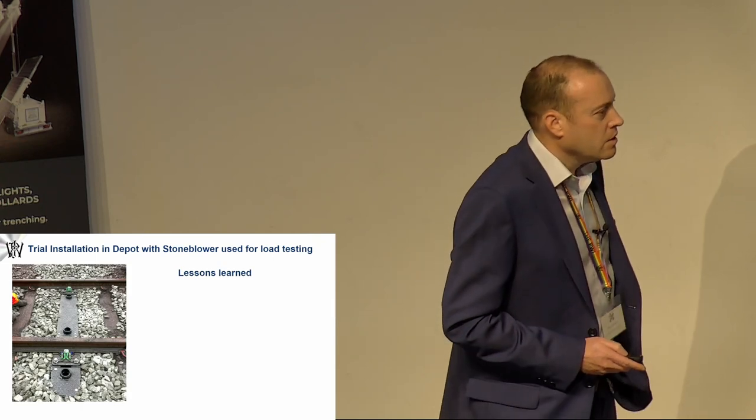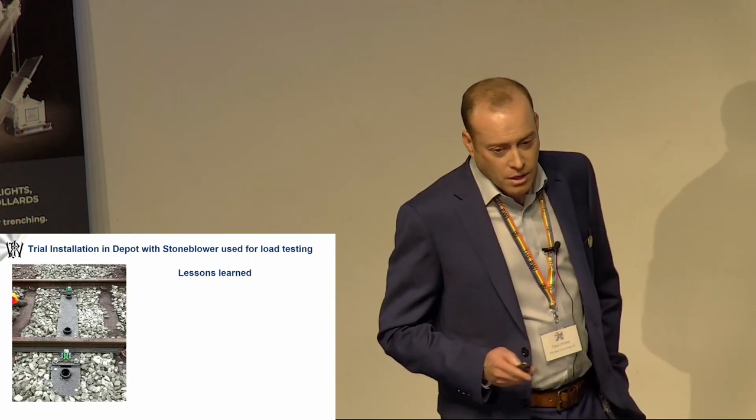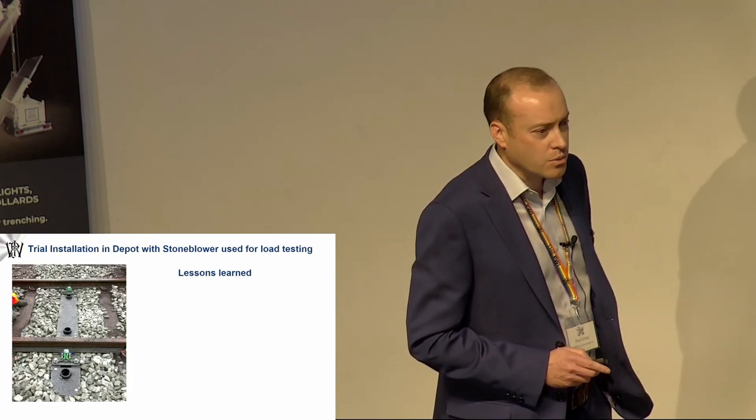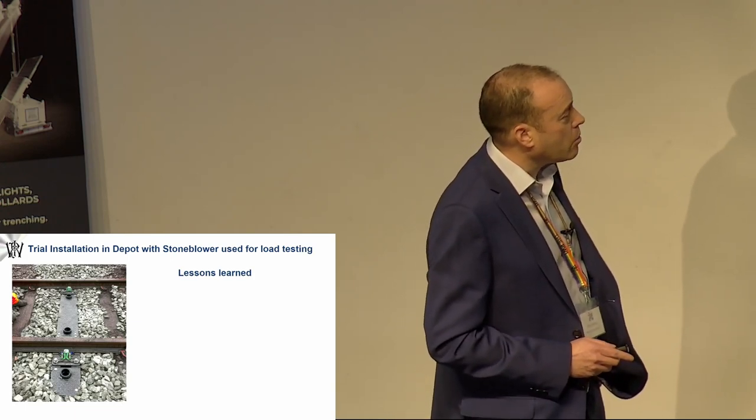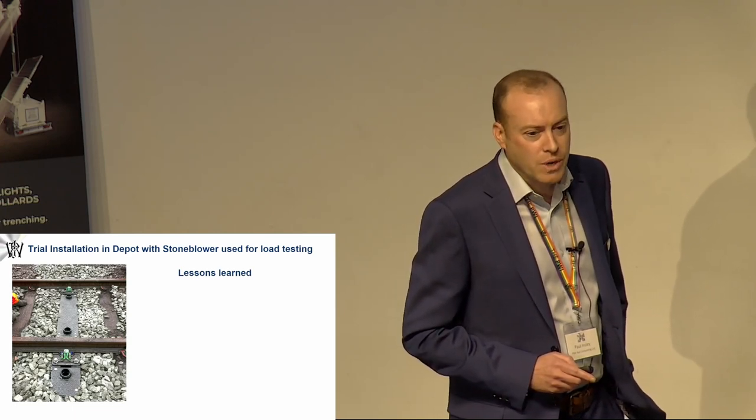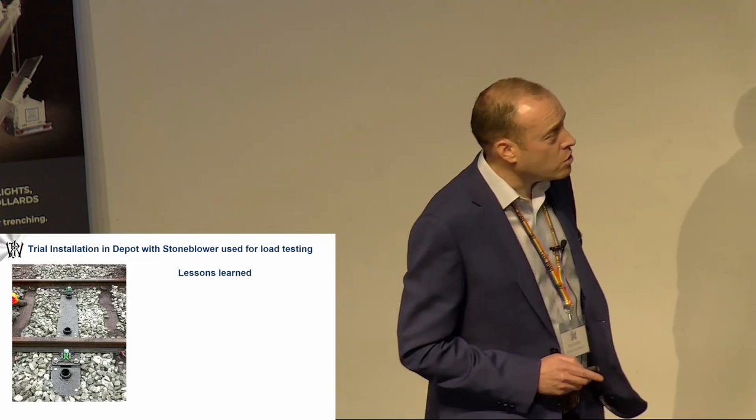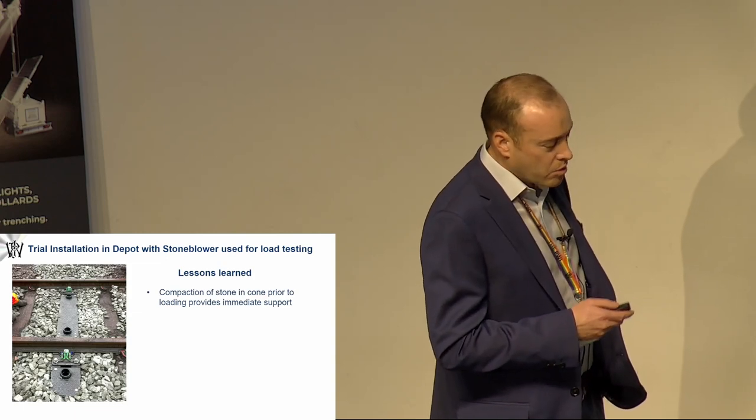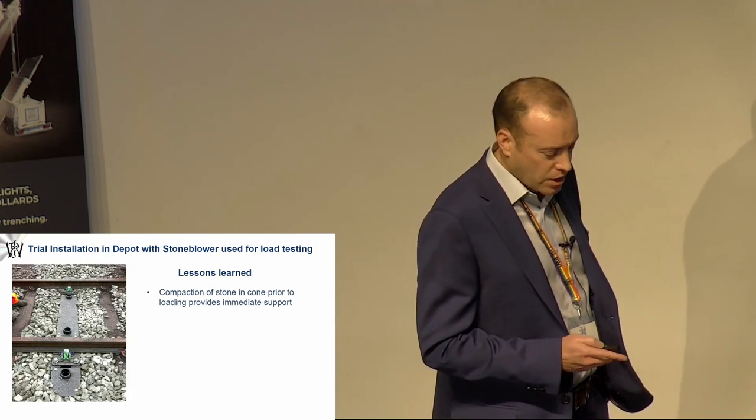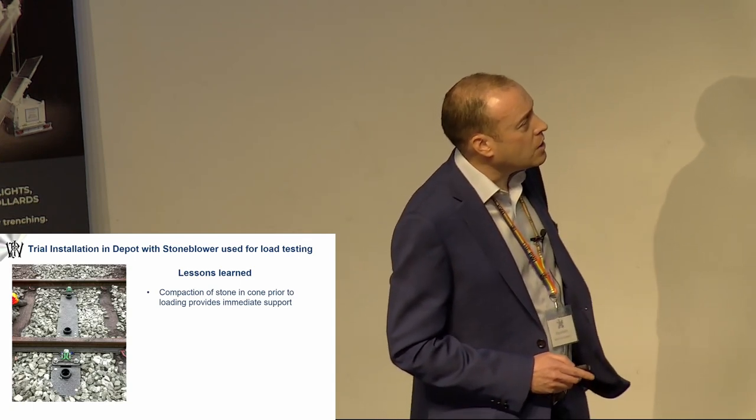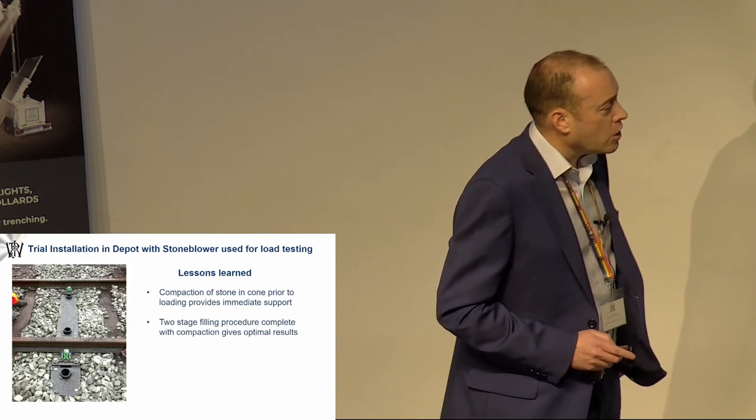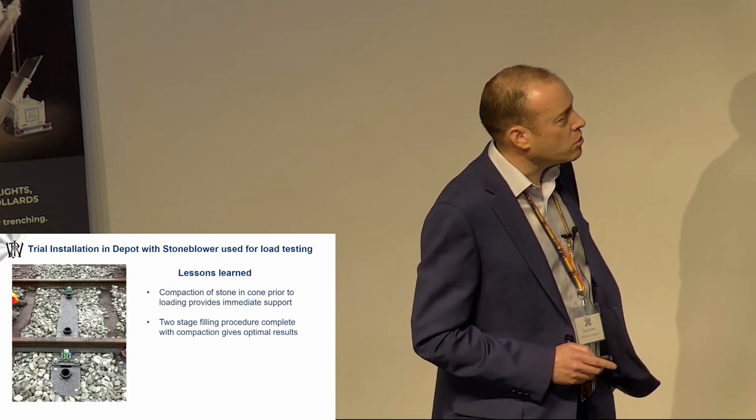As part of our development work with Network Rail under a non-disclosure agreement, and this is a patented product, we took it to a site after we'd done all these years worth of testing to prove that the system actually did what it said on the tin. We took it to a depot site. We took one sleeper and it was mainly for Network Rail to hold it, use it, get it in their hands to see what they could do with manipulation, what type of equipment we would and could use. The equipment we used was standard equipment. This sleeper, we were very lucky that we could run the stone blowing train backwards and forwards over it, so we were also able to take some level surveys and put some dynamic load on it at the time. A lesson we learned was that compaction of the stone in the cone prior to loading provided immediate support and also reduced the stone, which I'll come on to at a later date. A two-stage filling process, which was very simple and you'll see a short video, gave optimal results.